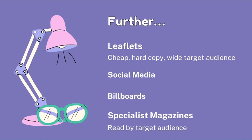Nowadays, a lot of people use social media and that's a very good way to advertise because everyone uses social media and it is much easier to reach the target audience. Other methods include billboards, as well as specialist magazines. A specialist magazine will be read by a target audience — for example, a magazine about cars will have a very specific and detailed audience of people interested in cars.